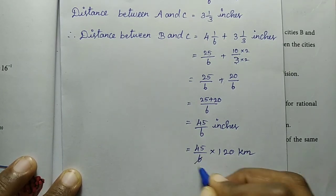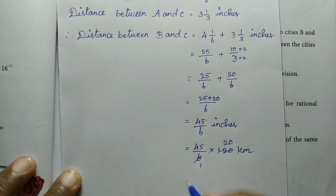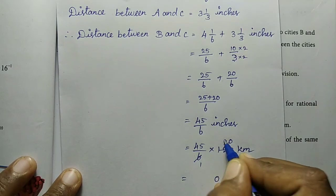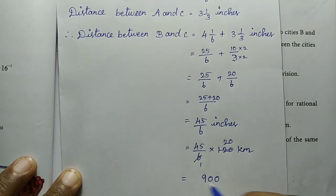We cross out the 6, dividing 120 by 6 gives 20. Then multiply the remaining values: 5 times 2 is 10, write 0 carry 1. 4 times 2 is 8, plus 1 is 9. So we get 900 kilometers.